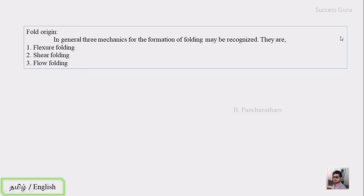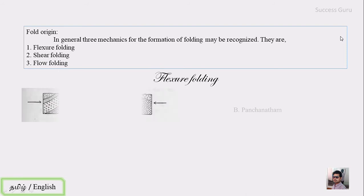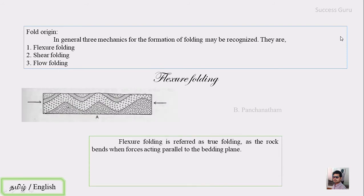The next topic is Fold Origin. The first one is Flexural Folding. The second one is Shear Folding. The third one is Flow Folding. Flexural Folding involves a stratified formation.